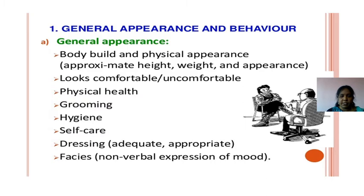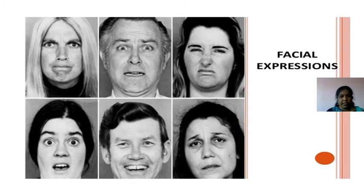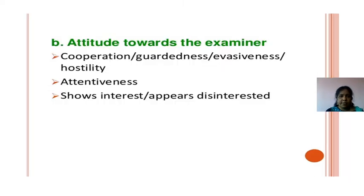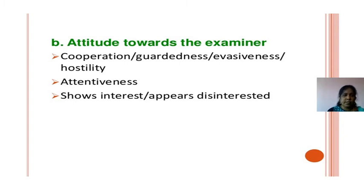Next, non-verbal expressions of mood — such as irritation, anger, or depression — can be observed. Attitude towards the examiner: whether cooperation is present, any hostility, attentiveness, whether showing interest or disinterest. Comprehension: whether intact or impaired — partially or fully.